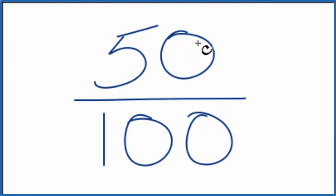When I look at the numerator and the denominator, I'm trying to find something that goes into both of these numbers evenly. It gives me a whole number.